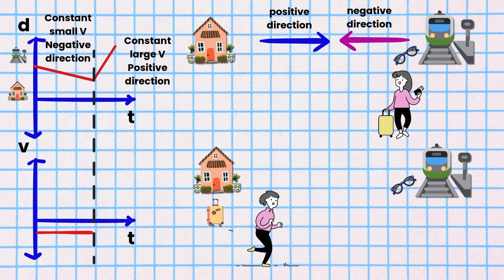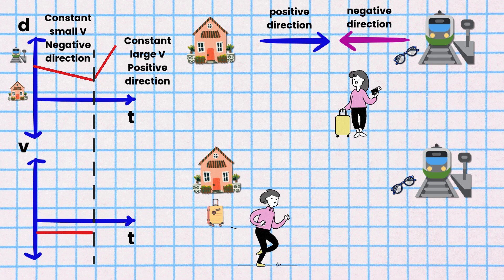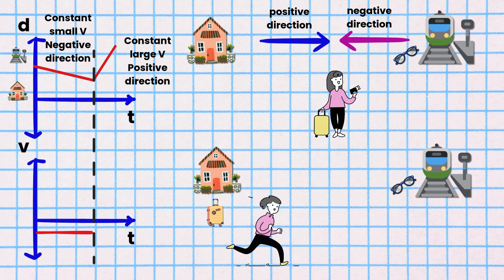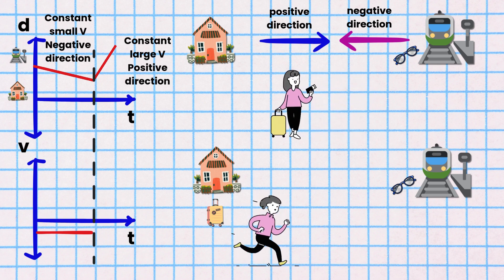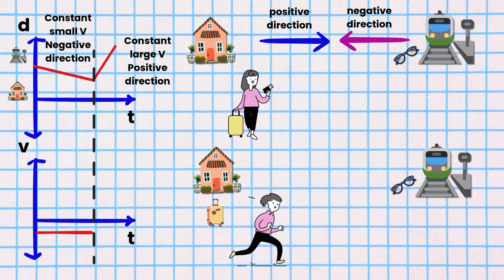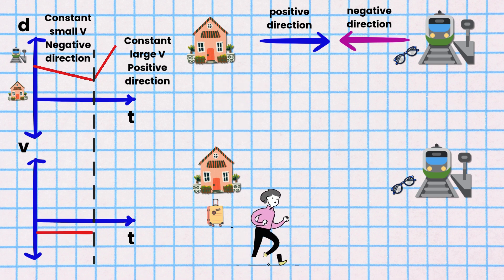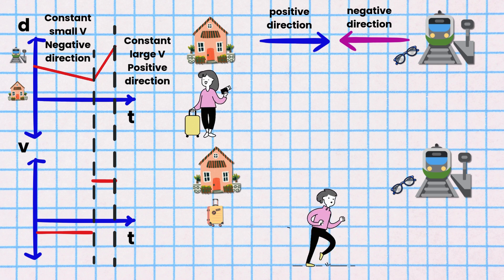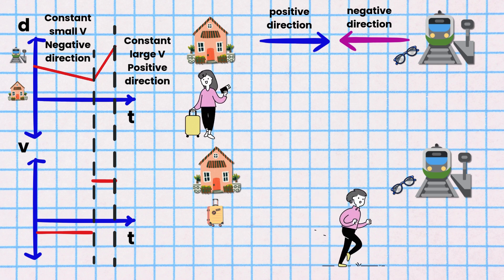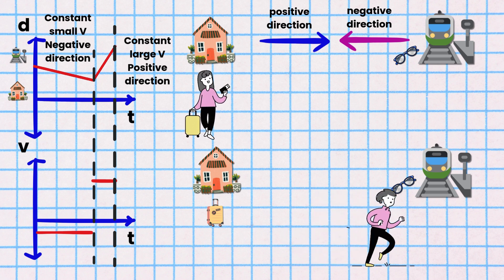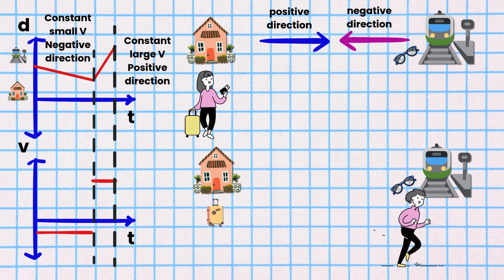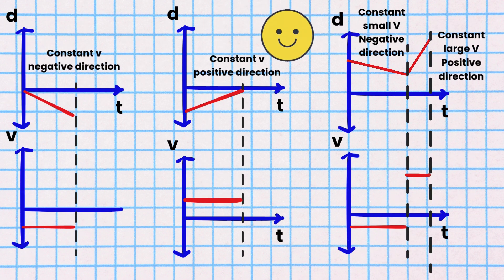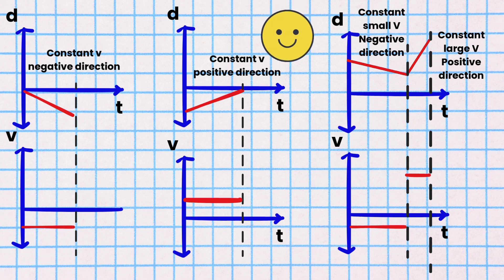For the first part of Mole's journey, the VT graph would be a horizontal line at a small velocity value in the negative quadrant below the time axis. For the second part of Mole's journey, the VT graph would be a horizontal line at a large velocity value in the positive quadrant above the time axis. Here are our second set of three VT graphs that match the motion of the three DT graphs.